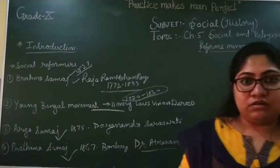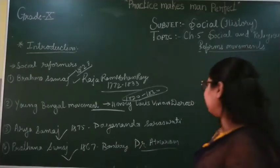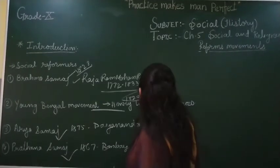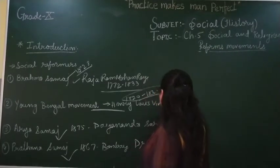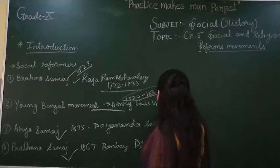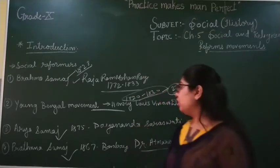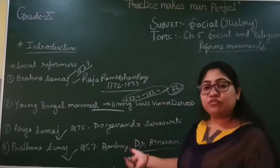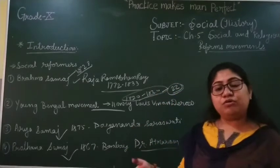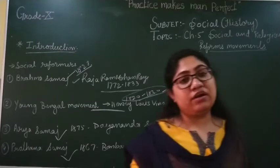After 1830, at only 22 years of age, he died because of cholera disease.